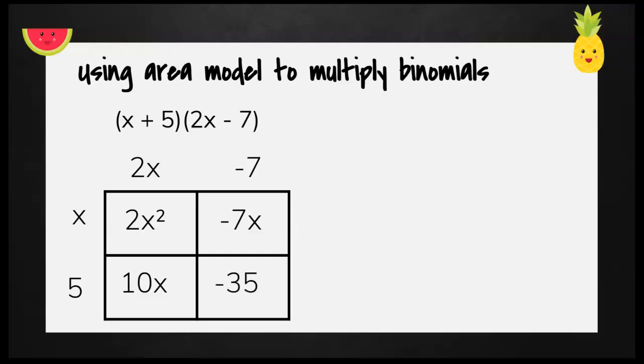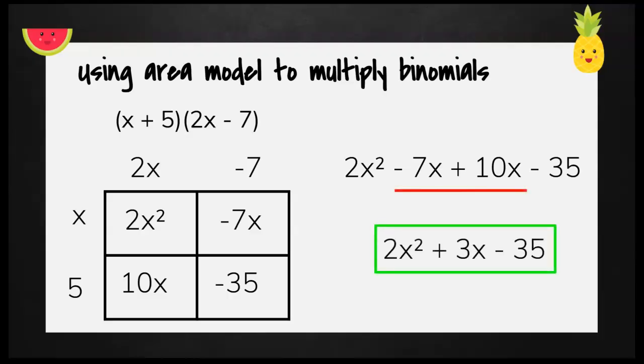Everything inside my box will be my final answer. When I write them side by side, I notice that I can combine my like terms and I get my final answer of 2x squared plus 3x minus 35.